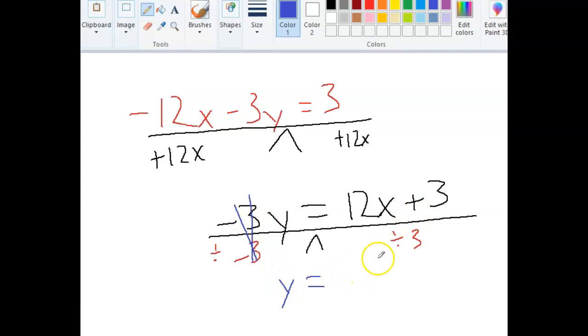And on this other side, I'm going to have, divide by negative 3. So on this other side, I'm going to have negative 4x and minus 1 when I divide everything, both numbers, by the negative 3. And so in this case, dividing by a negative is when the sign of a number would change. So 12 divided by negative 3 is negative 4. Positive 3 divided by negative 3 is negative 1.